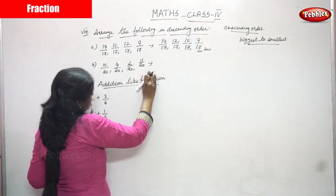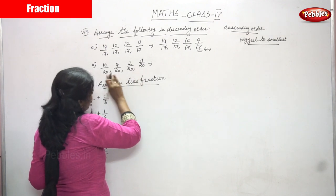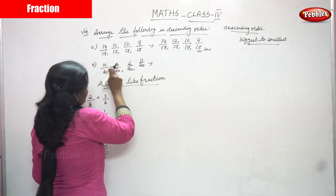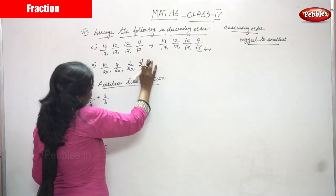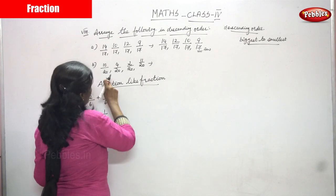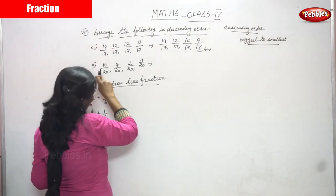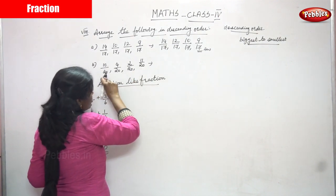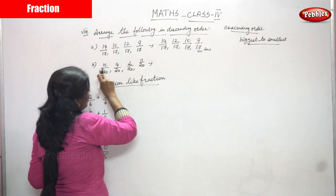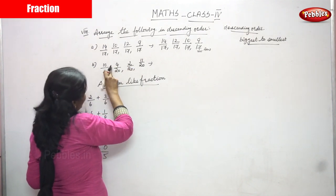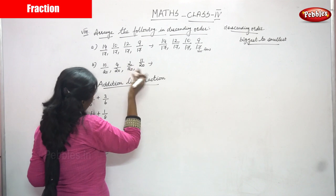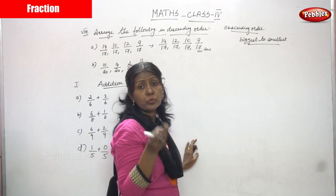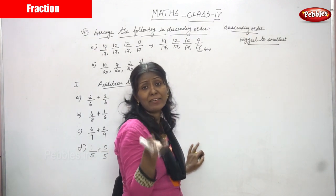Look at all the denominators. All the denominators are the same, so move on to the numerators. The numerators — 10, 4, 2, 11 — are all different. Since all the numerators are different, arrange in descending order. To arrange in descending order, start with the biggest number and end with the smallest number.